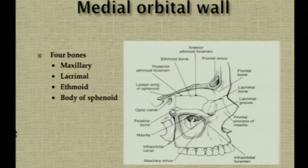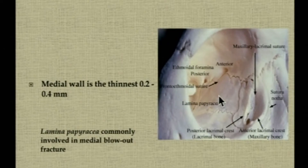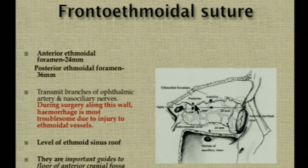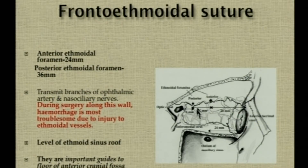The medial wall is formed by the frontal process of the maxilla, the lacrimal bone, the ethmoid bone, and the body of the sphenoid. It is the thinnest of all the walls — 0.2 to 0.4 mm thick — and hence the lamina papyracea is commonly involved in medial blowout fractures. The most important landmark is the fronto-ethmoidal suture, which marks the base of the anterior cranial fossa. The anterior ethmoidal foramen is 24 mm behind the anterior lacrimal crest, the posterior ethmoidal foramen is 12 mm behind that, and the optic canal is 6 mm behind the posterior foramen — all lying in the same vertical plane. The safe dissection limit is 35 mm along the medial wall, and we should not go above this suture line. The ethmoidal vessels transmit through these foramina, so care must be taken to manage bleeding while dissecting along this plane.